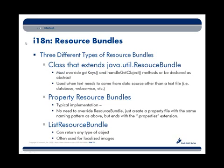The first type is creating a class. You create a class that extends java.util.ResourceBundle and override two abstract methods: getKeys and handleGetObject. Sometimes it makes sense to create an abstract super class for your resource bundles that all specific resource bundles will extend — where the abstract class overrides getKeys and each individual class implements handleGetObject. This type is typically used when you need text or objects to come from a data source other than a text file — such as a database or web service.